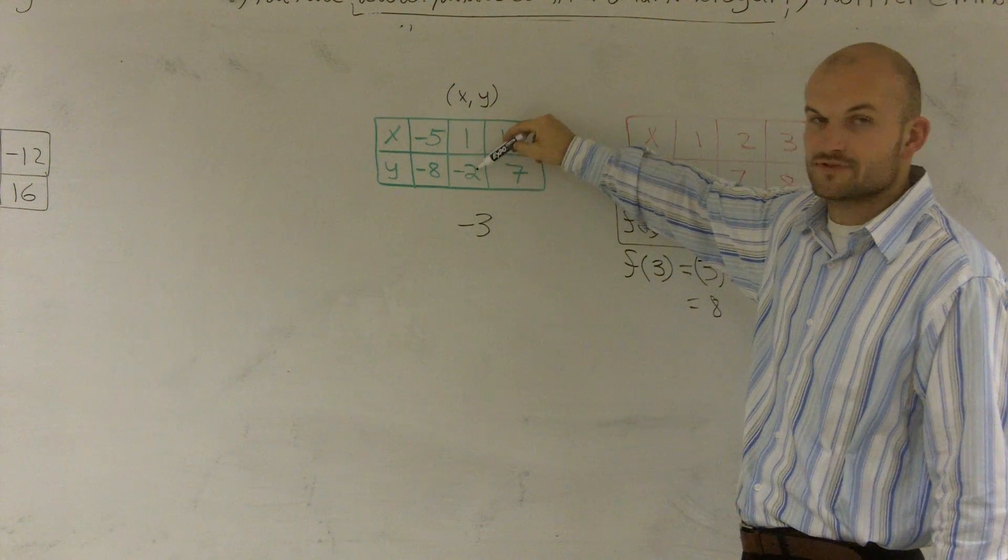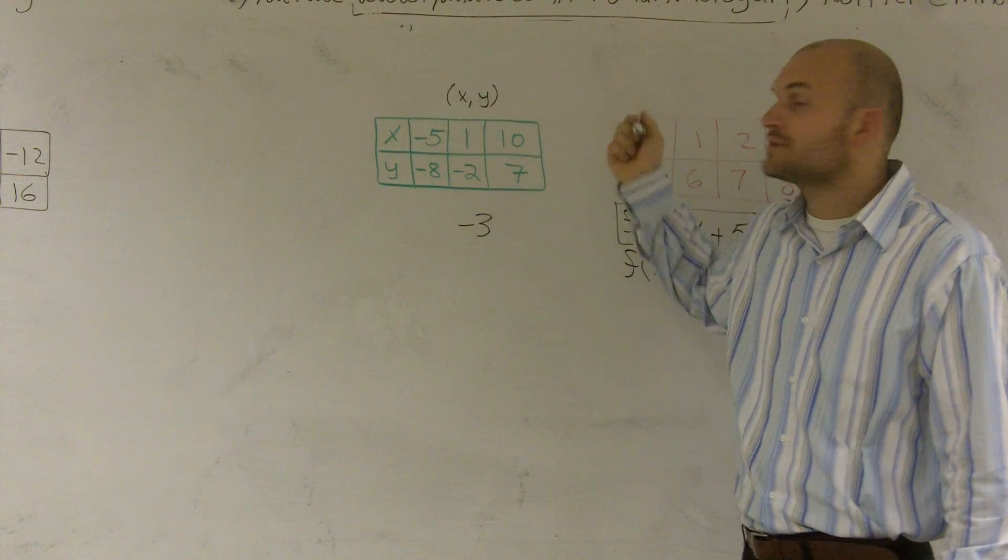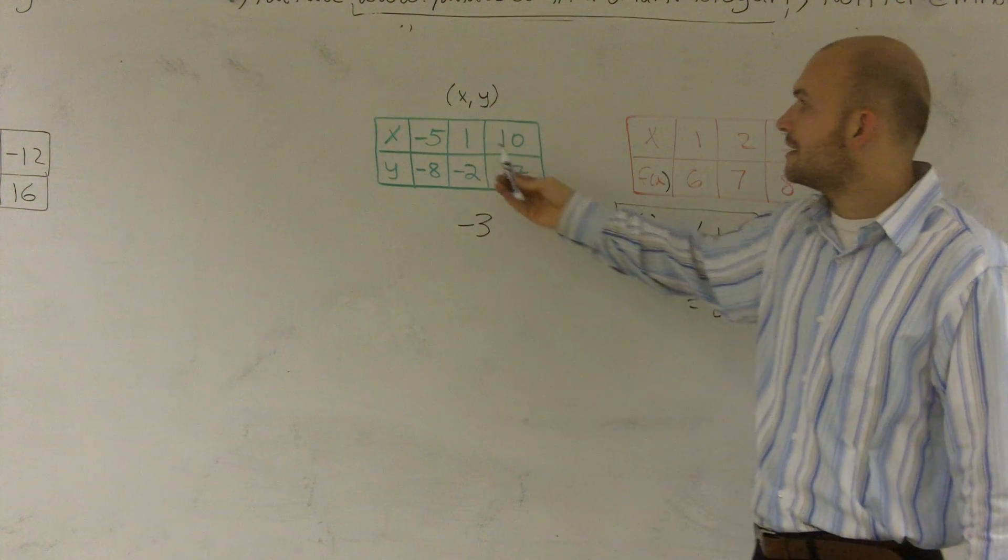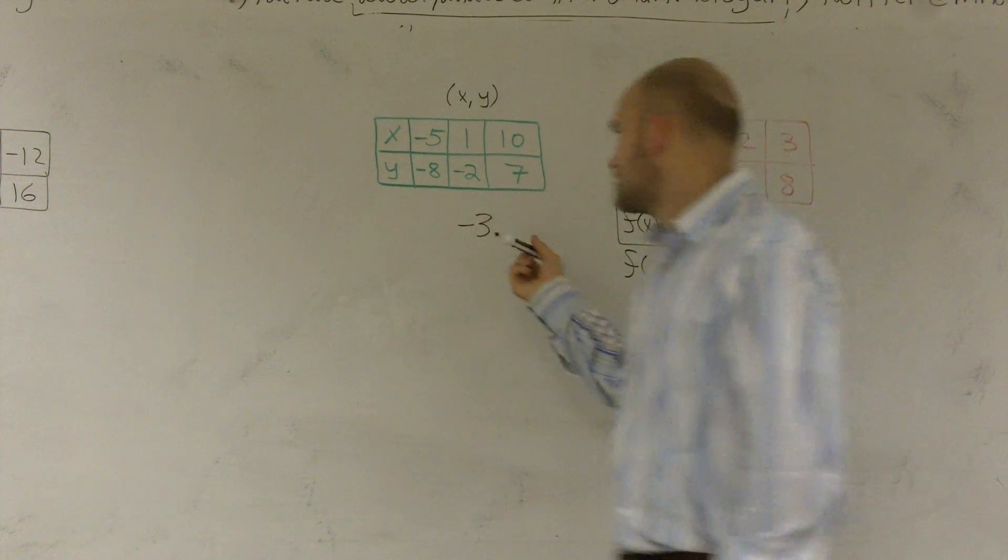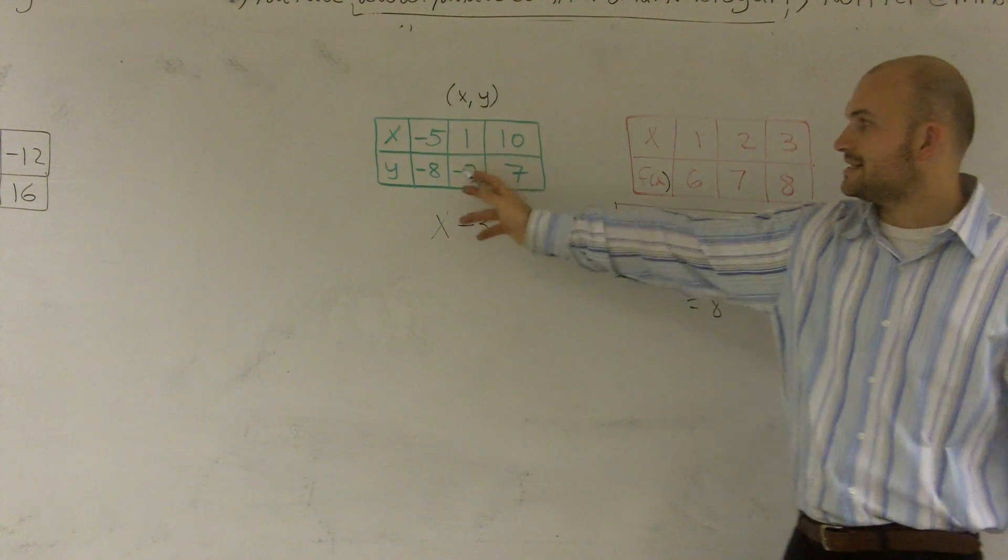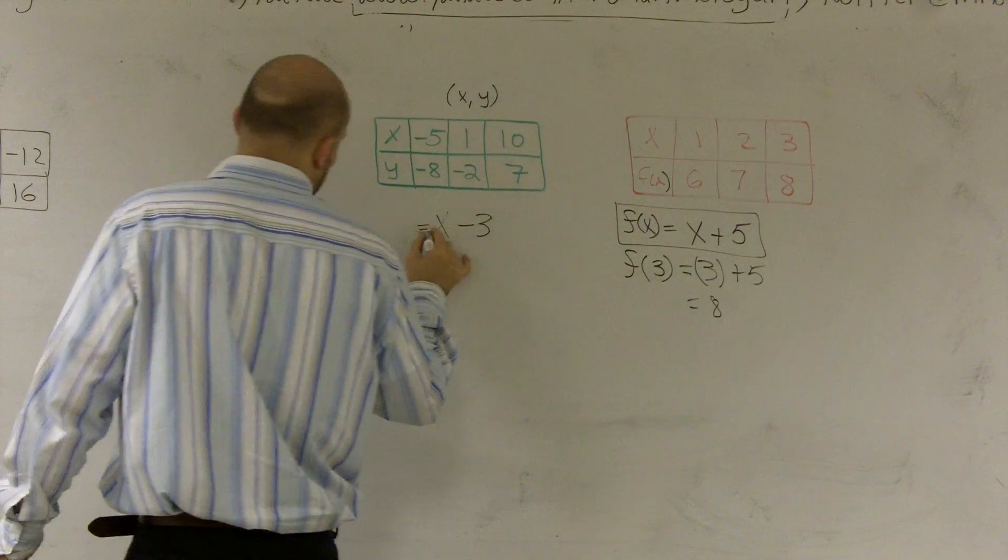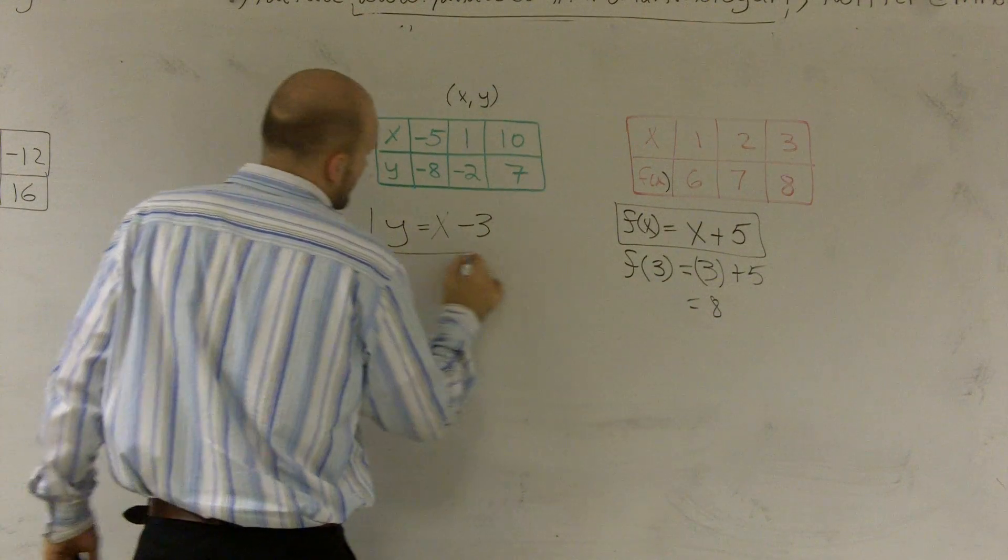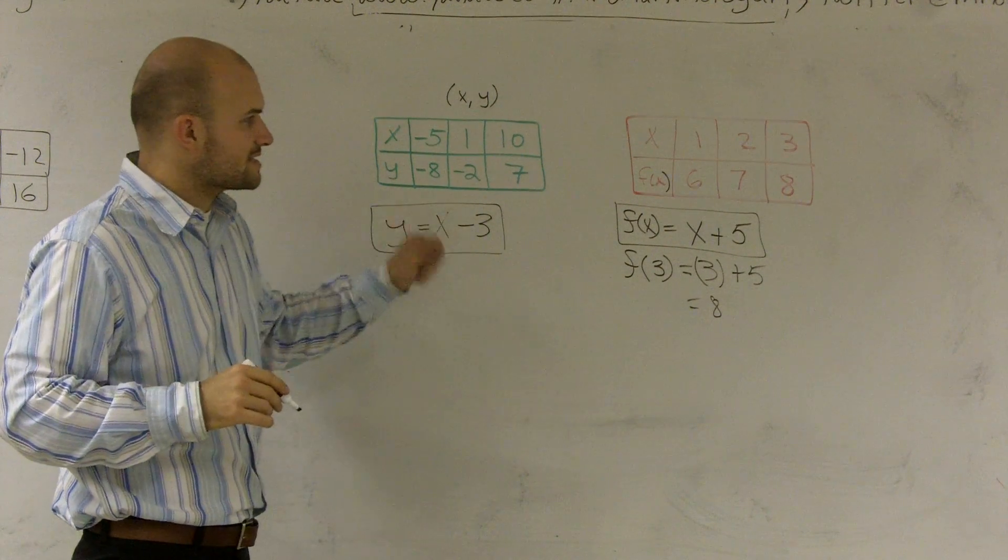Does 1 minus 3 give you negative 2? Yes. Does negative 5 minus 3 give you negative 8? Yes, it does. So therefore, I can subtract 3 from all these values, which we call our x. So if I say for any x value, for any number x minus 3, it's going to give me these values, which we call y. Therefore, the rule for this one is y equals x minus 3.